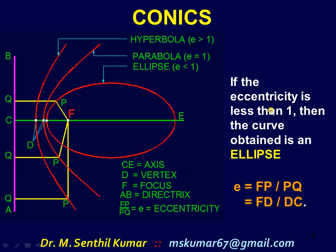Let us see about the different types of profiles that we get — either ellipse, parabola, or hyperbola — depending upon the eccentricity value. Case 1: If the eccentricity is less than 1, then the curve obtained is an ellipse. The ratio FP by PQ — it is quite evident that FP is smaller than the distance of PQ in the case of ellipse. So FP by PQ is less than 1, and the profile that you get will be an ellipse.